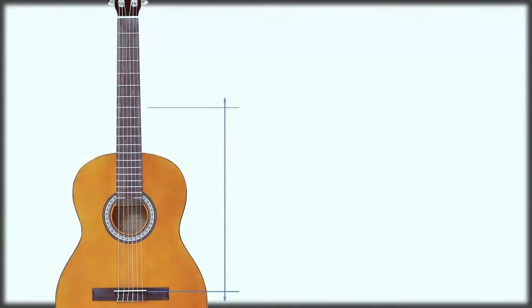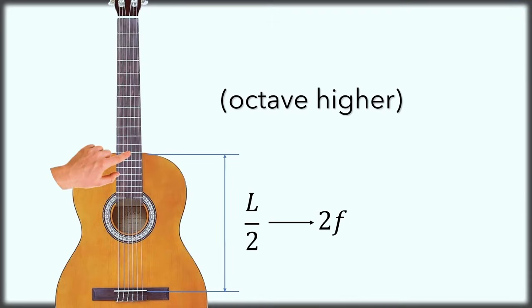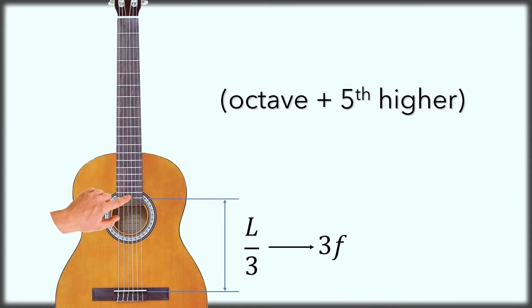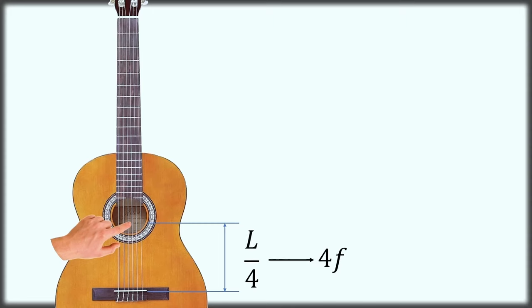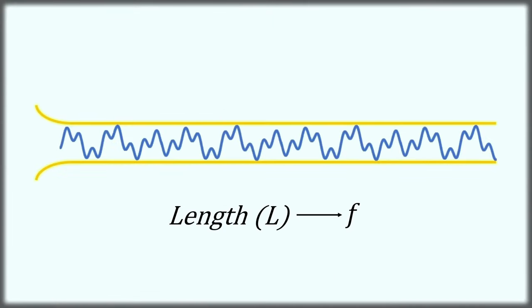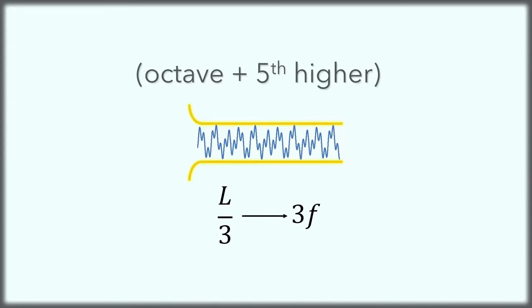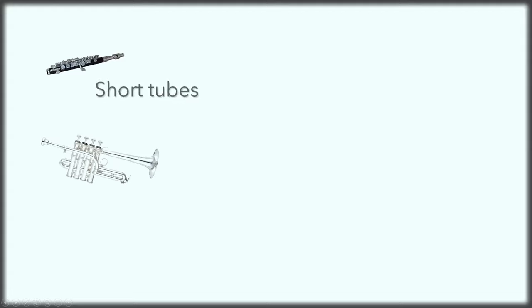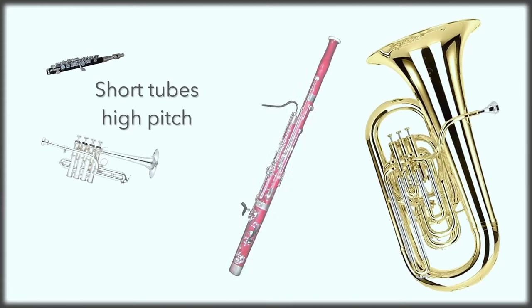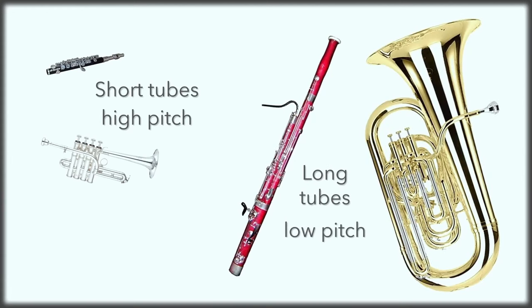So it's with timbre that we begin our investigation. Pythagoras is generally credited with the discovery of the mathematical relationship between the length of a vibrating body, such as a string or a tube, and the pitch it produces when excited by plucking, striking, and so forth. He found that vibrating air in short tubes produces high frequencies and therefore high pitches, and long tubes produce lower frequencies. Gradually lengthening a tube, such as when a trombonist plays a glissando, illustrates this very clearly.